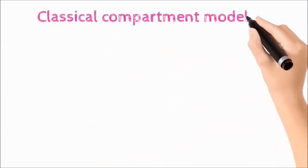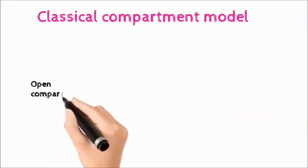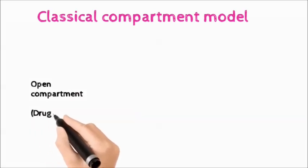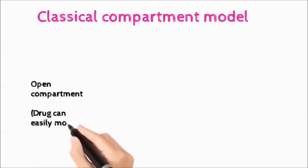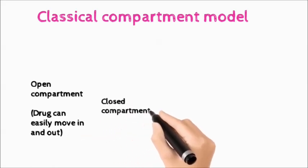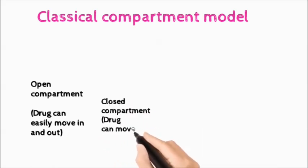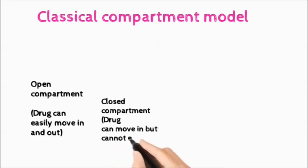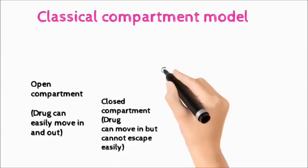Classical Compartment Model is further divided into four types. Number one is Open Compartment in which the drug can move in and out easily. Number two is Close Compartment in which the drug can move in but cannot escape out easily.